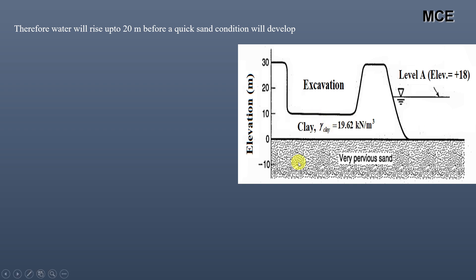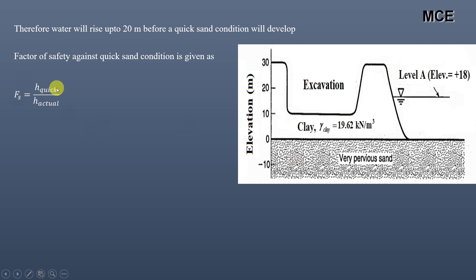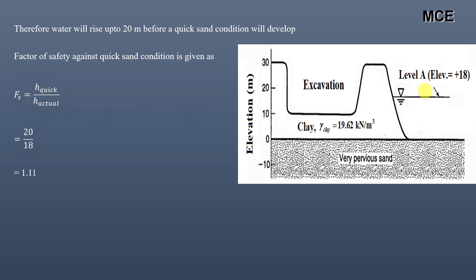The factor of safety against quicksand for the given case is FS equals the head for quicksand condition to develop divided by the actual head of water. That is 20 divided by 18, which equals 1.11. This is the factor of safety against quicksand for the present case. When the water level is at 18 meters, the quicksand condition will not develop.